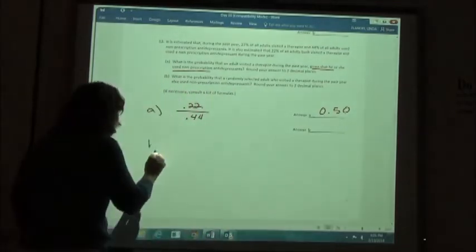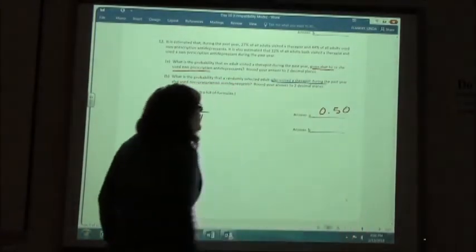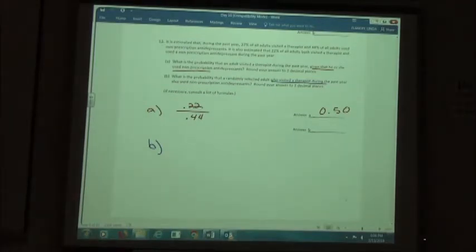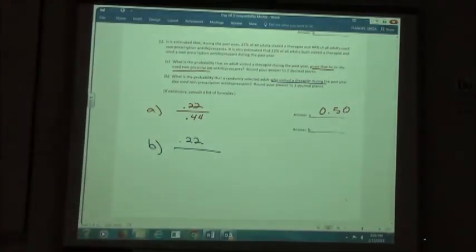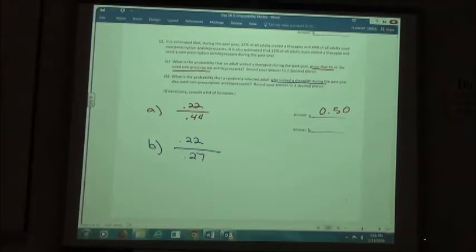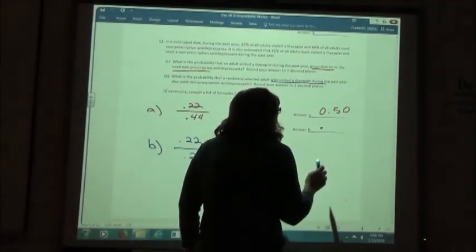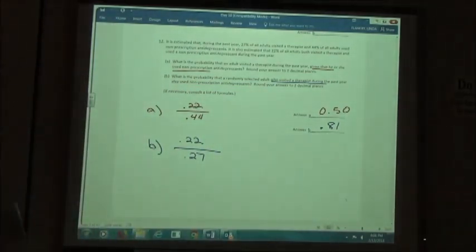Second part of that: what is the probability that a randomly selected adult who visited a therapist during the past year also used non-prescription antidepressants? That one's trickier because it doesn't say the word given in there, right? But it's given that they visited a therapist; we want to find the ones that use the non-prescription antidepressants. So the top number is going to be our 22%, the bottom number is the percent who visited the therapist. If in doubt, it should be the opposite of the other one. So when I divide that out to two decimal places, I get 0.81.